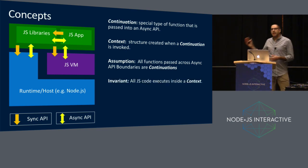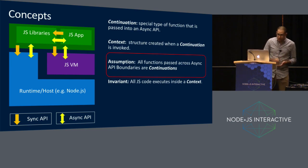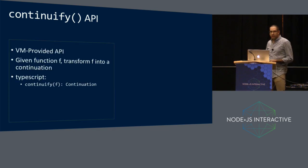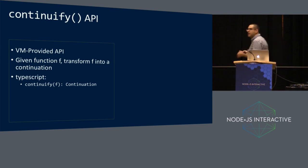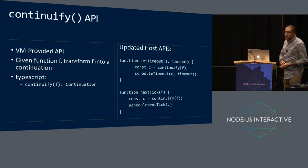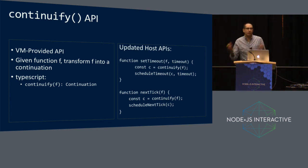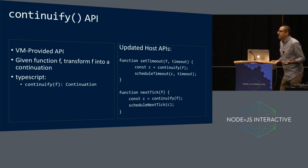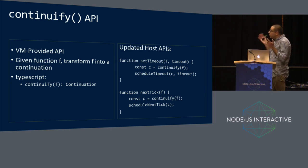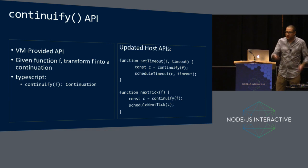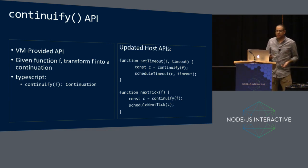There's an invariant: all JavaScript code executes inside of a context. And there's an API we'll call Continuify. What Continuify does is: given a function F, if F is already a continuation, return F; otherwise, transform it into a continuation. You can go into these asynchronous API boundaries at the host level, in user libraries, or at the VM level, and every parameter you know is a function, you Continuify it. Callers of this API don't need to do anything to follow this model. There's some TypeScript there to exemplify what the signature of Continuify looks like.